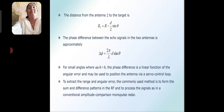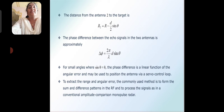The phase difference between the two echo signals at the two antennas is approximately Δφ = (2π/λ) · D · sin θ. For small angles where sin θ ≈ θ, the phase difference is a linear function of angular error and may be used to position the antenna via a servo control loop. To extract the range and angular error, the commonly used method is to form sum and difference patterns in the RF and process the signals as in a conventional amplitude comparison monopulse radar.